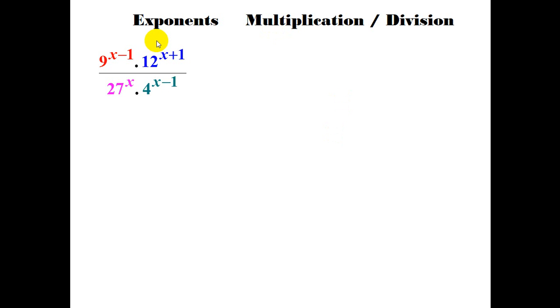Hi, welcome to a session on exponents, multiplication and division. Looking at the problem we have, 9 to the power x minus 1 multiplied by 12 to the power x plus 1 divided by 27 to the power x times 4 to the power x minus 1.